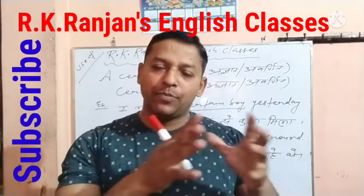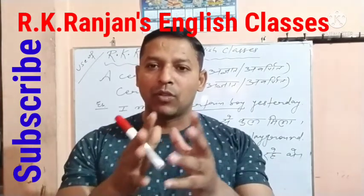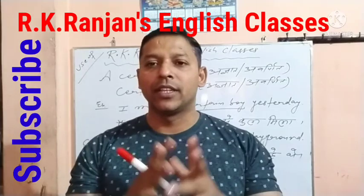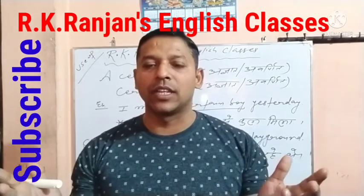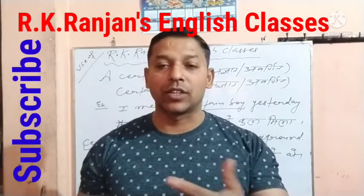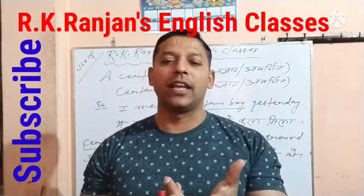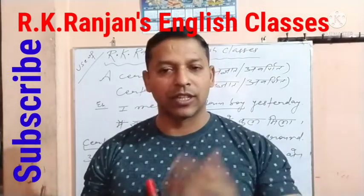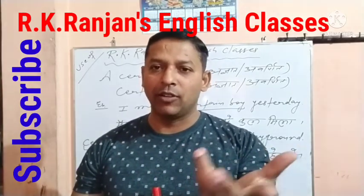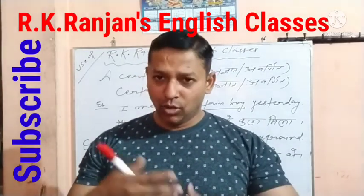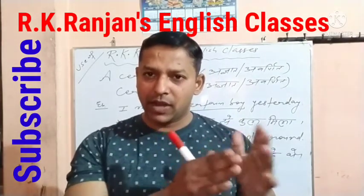'Certain' के बाद plural countable noun होता है। Plural countable noun जैसे boys, girls, chairs, oxen, pins, etc. आपको पता है कि 'boys' क्या है — एक से अधिक है और गिनती हो सकते हैं। 'Girls' भी एक से अधिक है और गिनती हो सकते हैं। तो plural countable noun 'certain' के बाद लेना है।